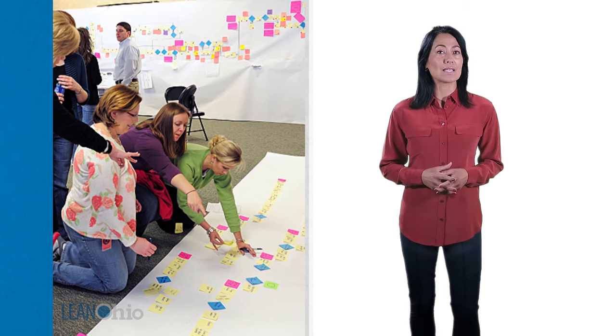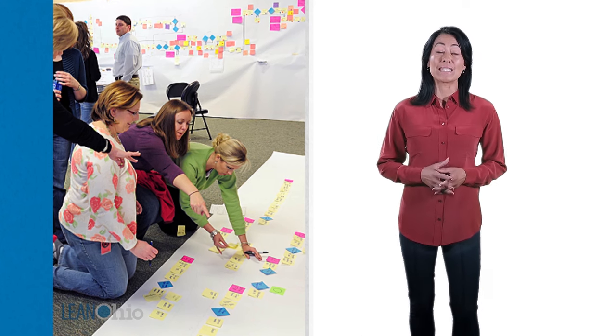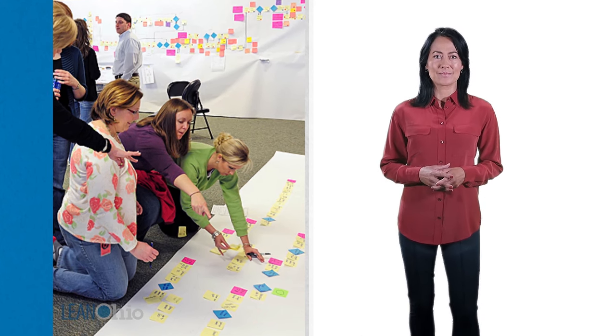Mapping all of the steps of a process and identifying the job function that completes each step allows us to identify areas for improvement. Process mapping is bold and visual, helping to make the process visible.